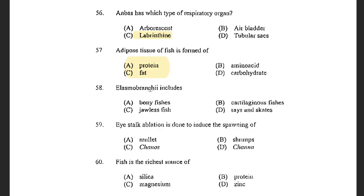Next question: Elasmobranchii includes — options are Bony fish, Cartilaginous fish, Jawless fish, and Rays and Skates. The answer is Rays and Skates. Elasmobranchii contains Rays and Skates. Agnatha are known as Jawless fish.